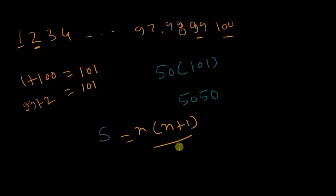Where n is the number. In this case, 100 is our number, and n plus 1 is 101. When you multiply 100 times 101 and divide by 2, you get 5050.